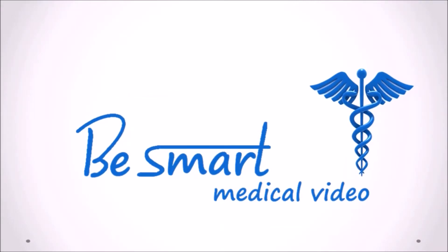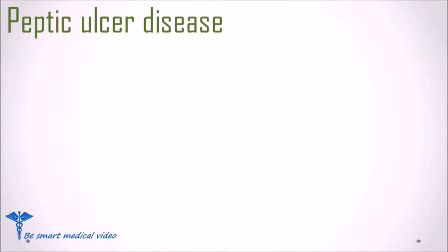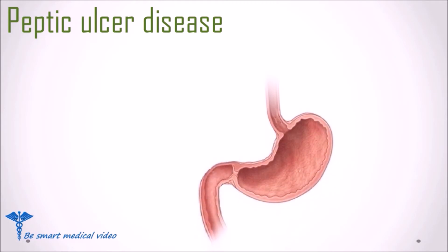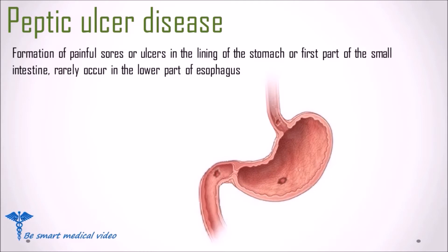Welcome to Be Smart Medical video. In this part we will discuss peptic ulcer disease. Peptic ulcer disease, or PUD, is the formation of painful sores or ulcers in the lining of the stomach or first part of the small intestine, also called the duodenum. It rarely occurs in the lower part of the esophagus. When an ulcer occurs in the stomach it is known as a gastric ulcer, in the duodenum as a duodenal ulcer, and in the esophagus as an esophageal ulcer.